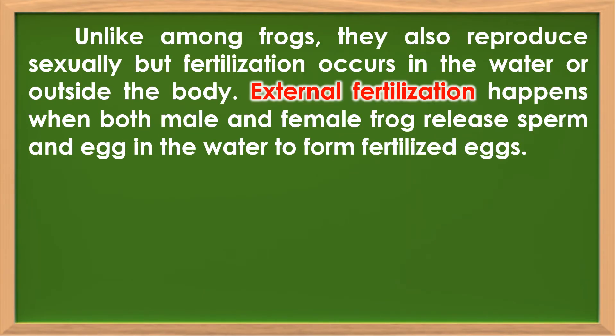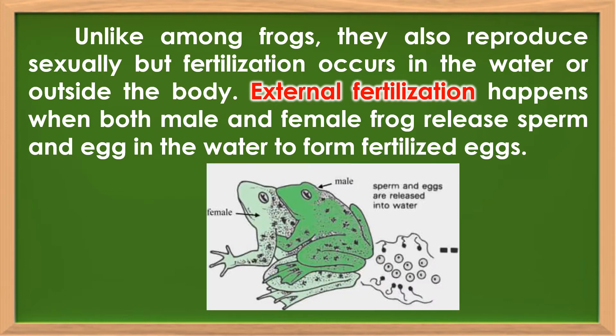Unlike frogs, they also reproduce sexually, but fertilization occurs in the water or outside the body. External fertilization happens when both male and female frogs release sperm and egg in the water to form fertilized eggs. This picture shows how external fertilization happens.